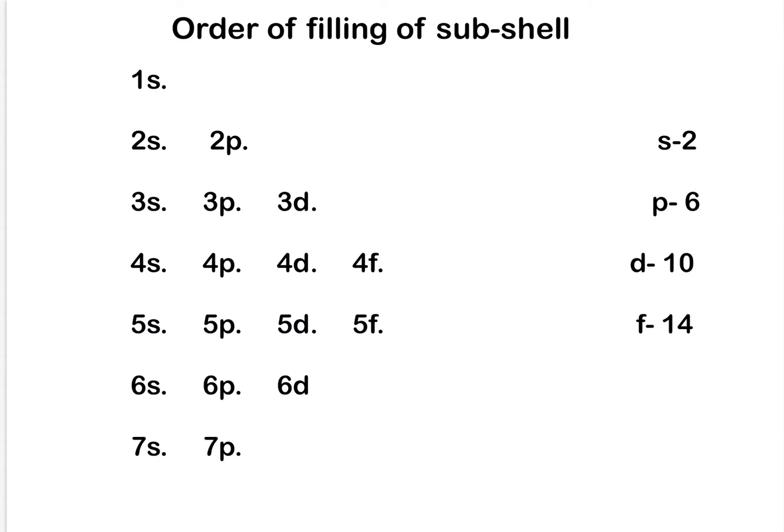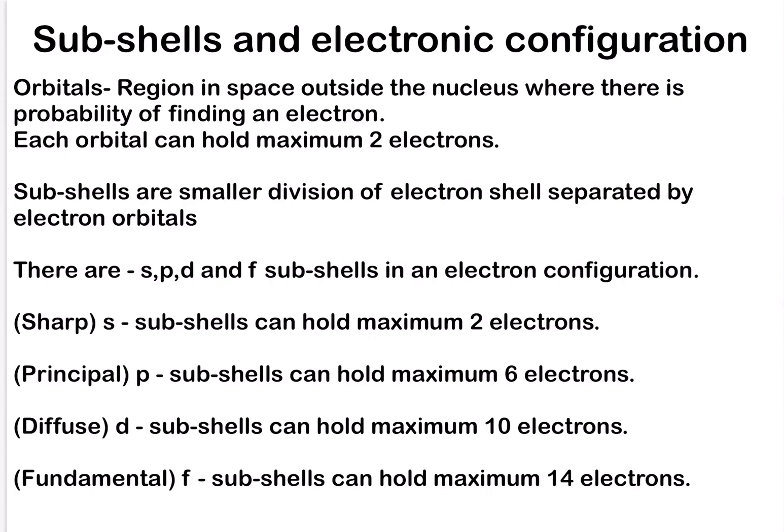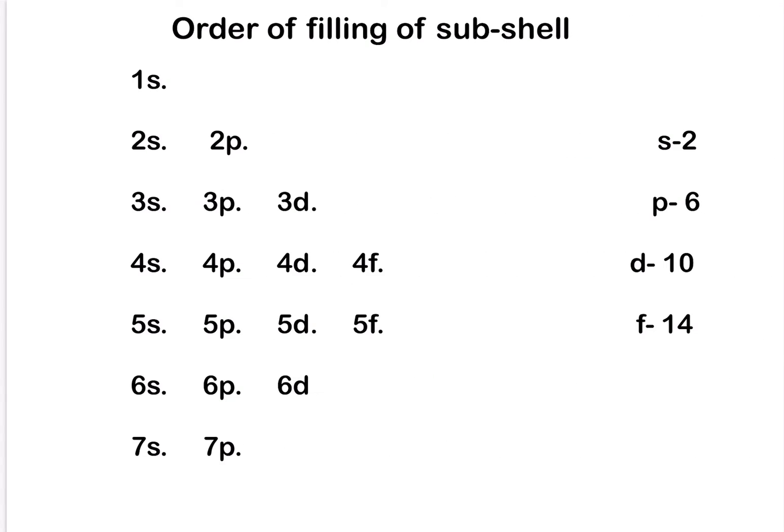The order of filling of subshells is important to understand because the whole lesson on electronic configuration depends on it. That is the order in which electrons fill the subshells. If you look at this diagram, you will see 1S, 2S, 3S, 4S, 5S, 6S, and 7S.